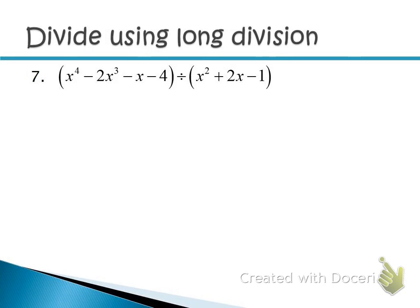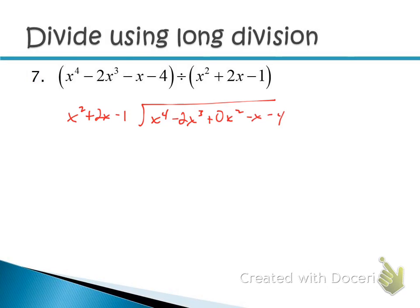Problem 7 has a missing term in the dividend. We're dividing by x² + 2x − 1 — all terms are there. But the dividend x⁴ − 2x³ is missing the x² term, so we fill in +0x². Then we have −x − 4. Divide x⁴ by x² to get x². Put x² on top. Multiply down: x² times (x² + 2x − 1) = x⁴ + 2x³ − x². Change all signs. Get 0, then −4x³ + x². Bring down −x.